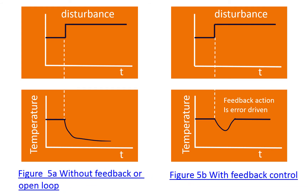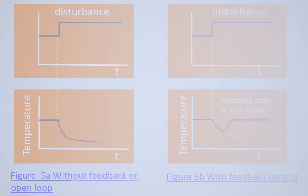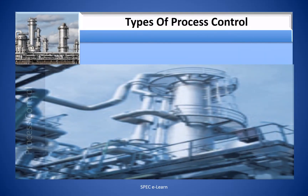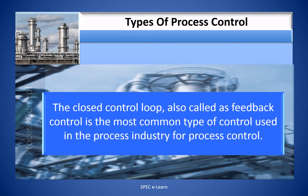The occurrence of a disturbance and the control system response is illustrated in this sketch. The disturbance could be a feed rate reduction or decrease in feed supply pressure, which affects the reactor temperature. In an open loop control system with no feedback, the temperature decreases, and if no manual action is taken, the temperature will continue to decrease. In the feedback control, the cooling water control valve will close and bring the temperature close to the set point. The measured process variable is used to initiate the control action — the control action is error driven. The closed loop control, also called feedback control, is the most common type of control used in the process industry.